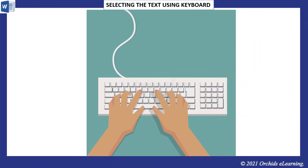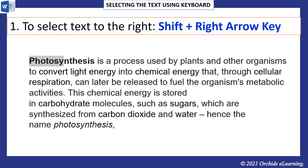Another way to select text is by using the keyboard. We have some shortcut keys to select the text in various ways. To select text to the right, press Shift + Right Arrow key.